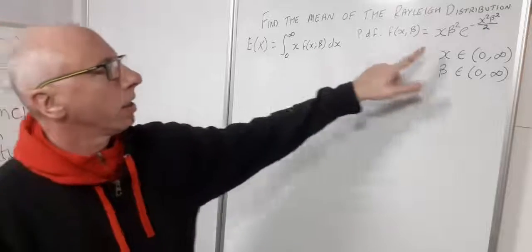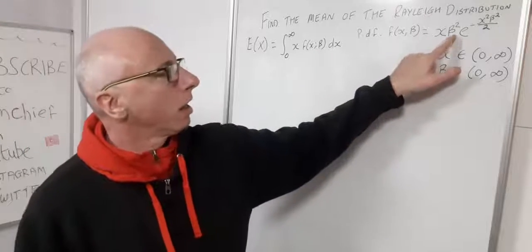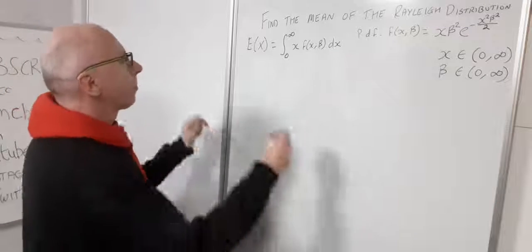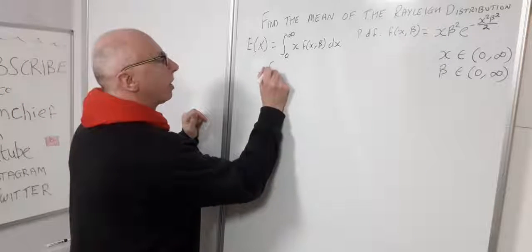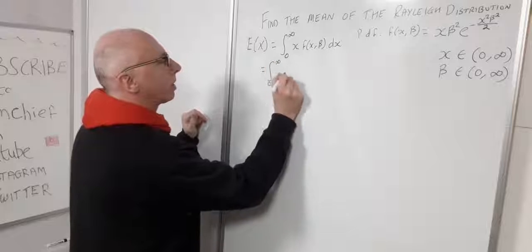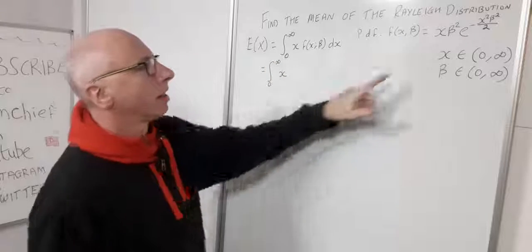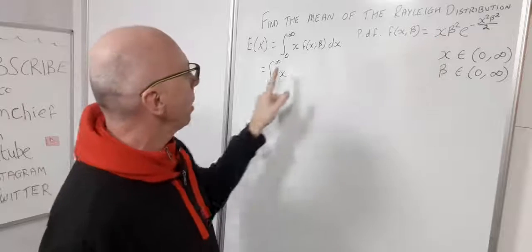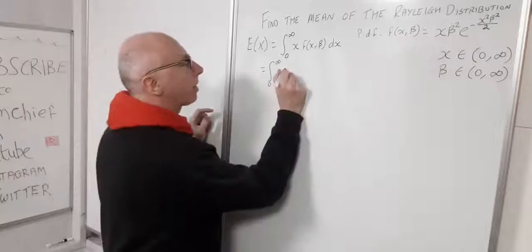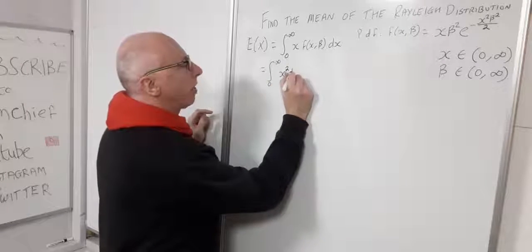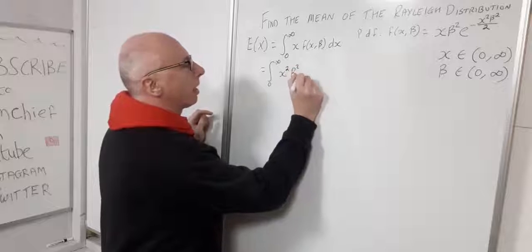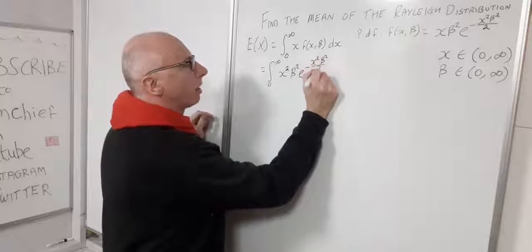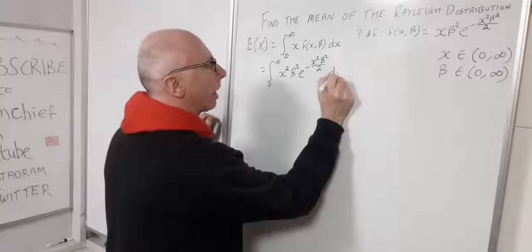What we need to do now is plug this PDF into the integral. So we'll have from zero to infinity of x times x times beta squared — multiplying by x again gives us x squared — and then beta squared times e to the minus x squared beta squared over 2, dx.